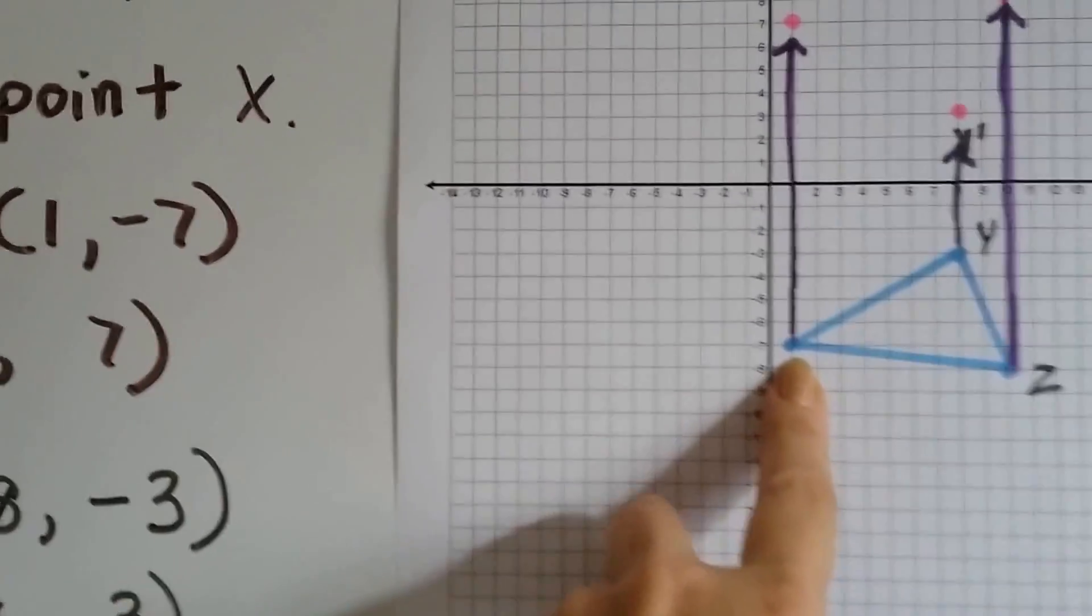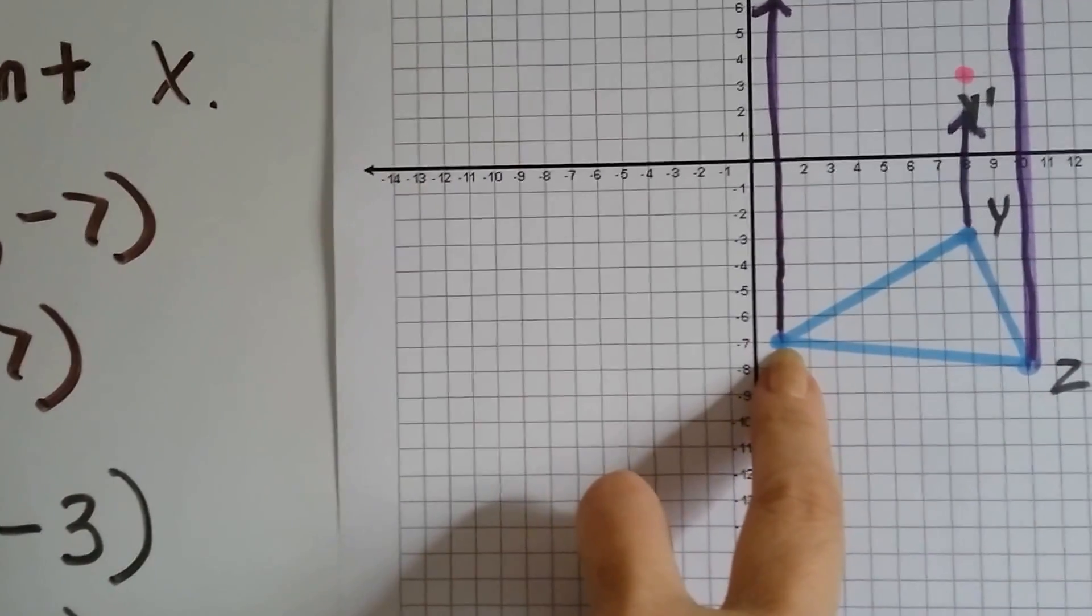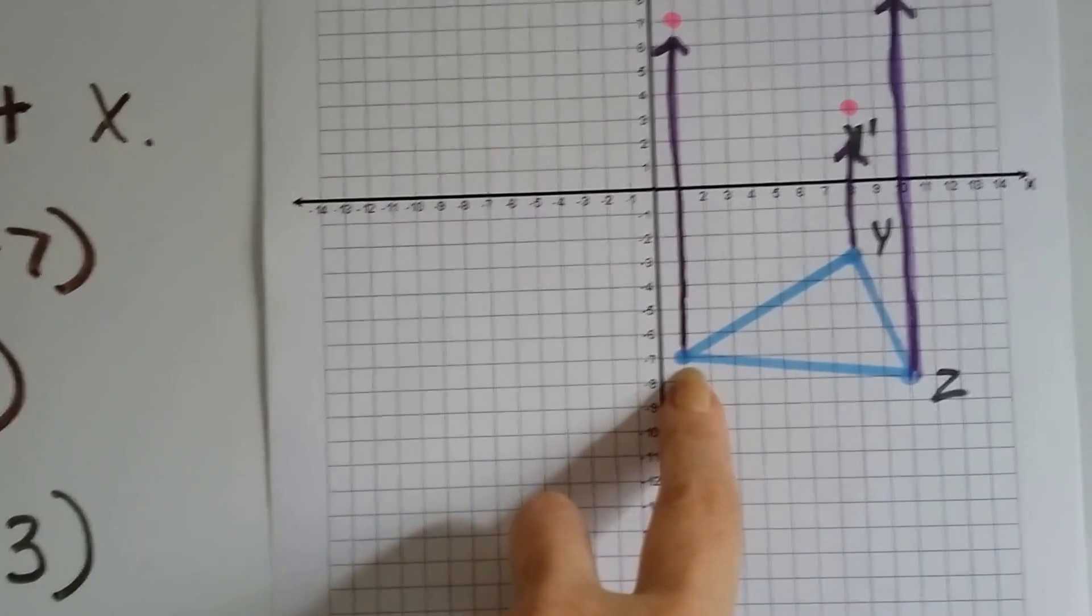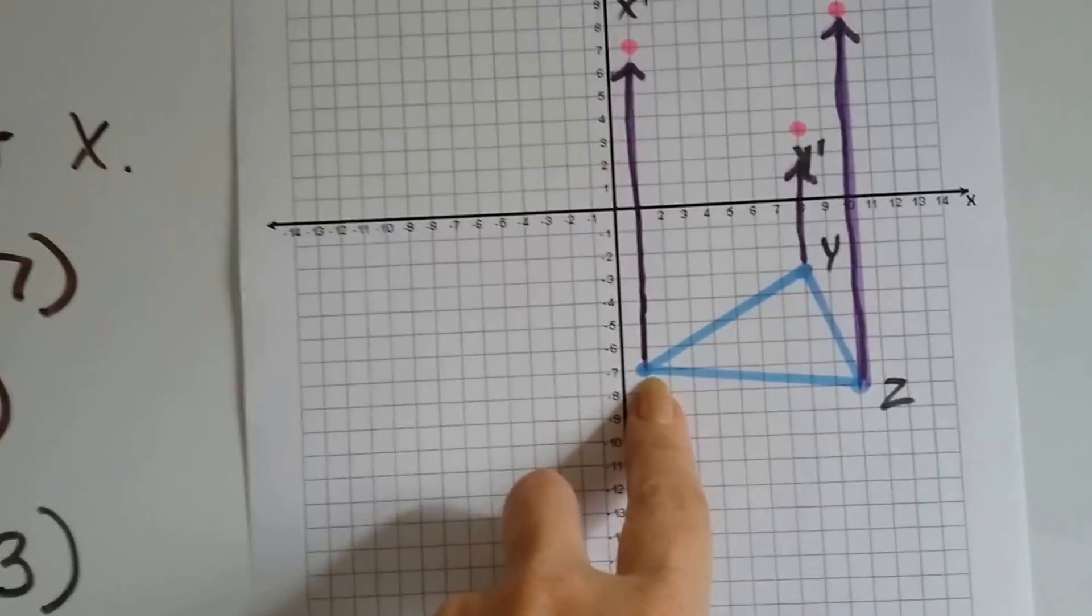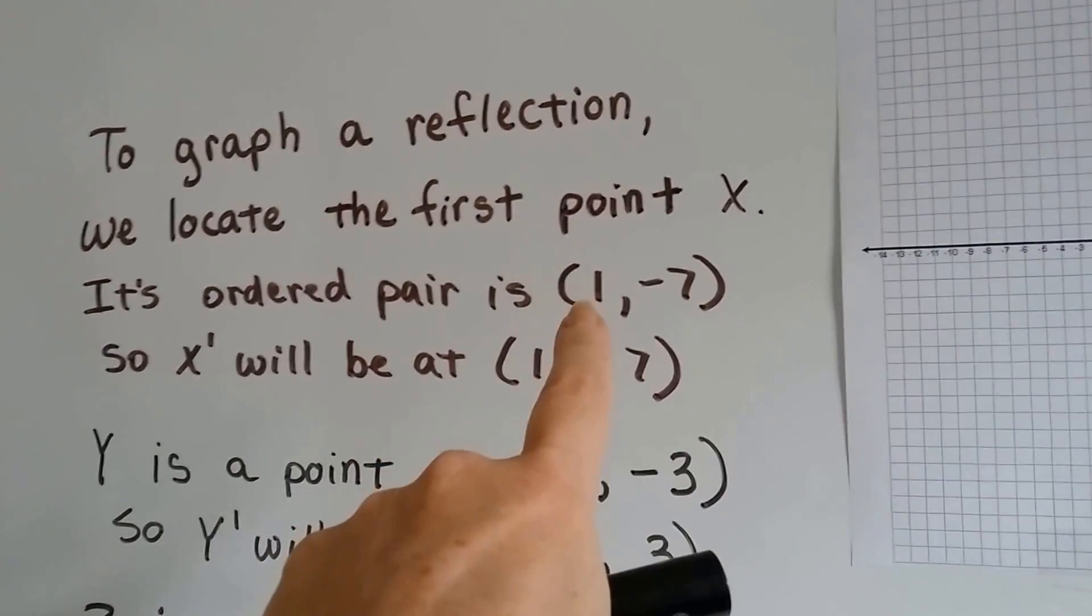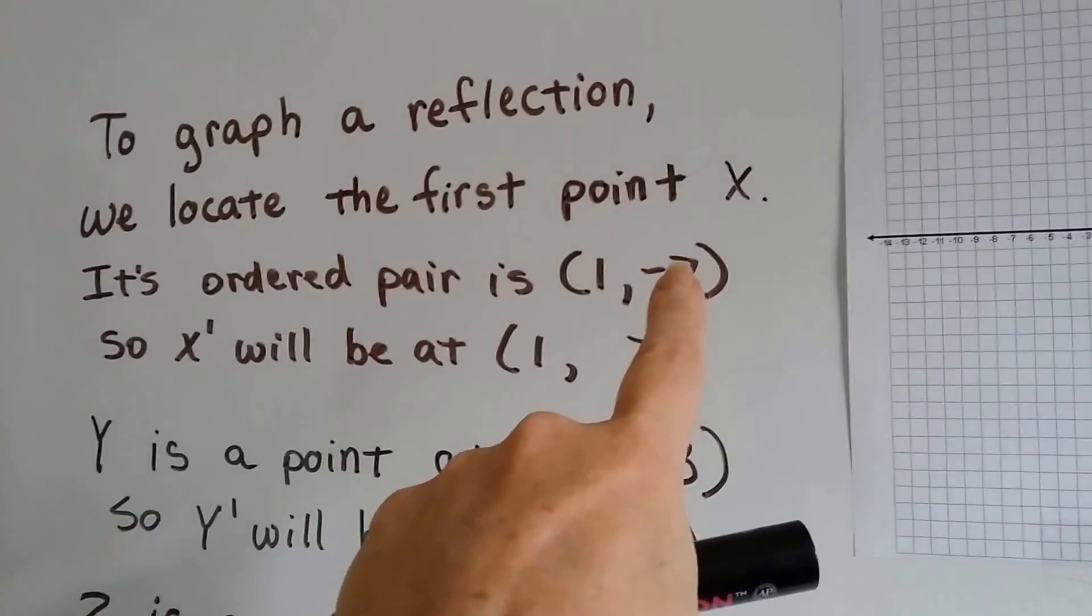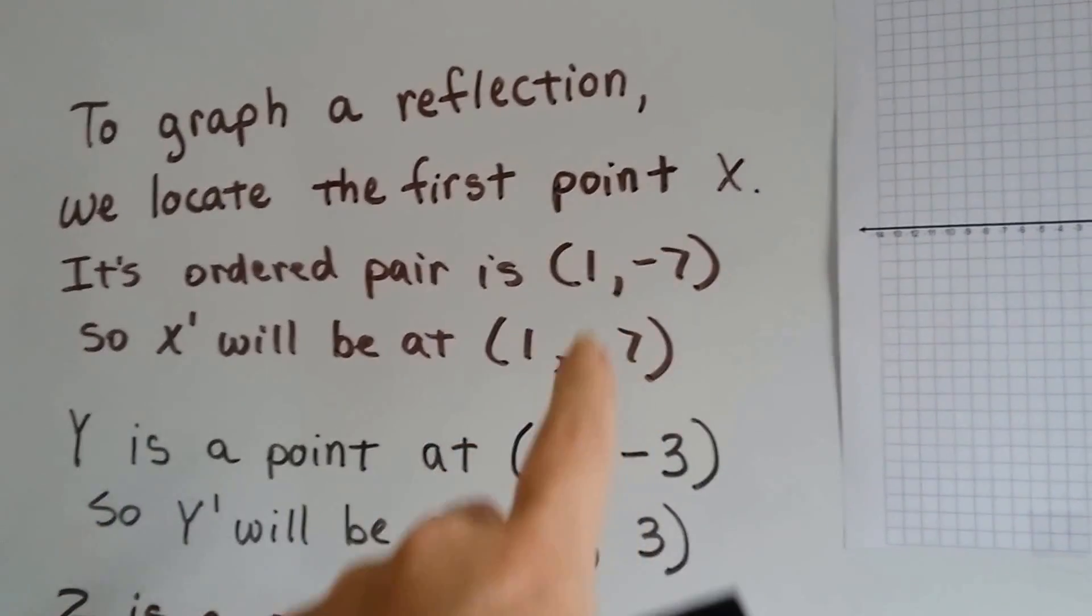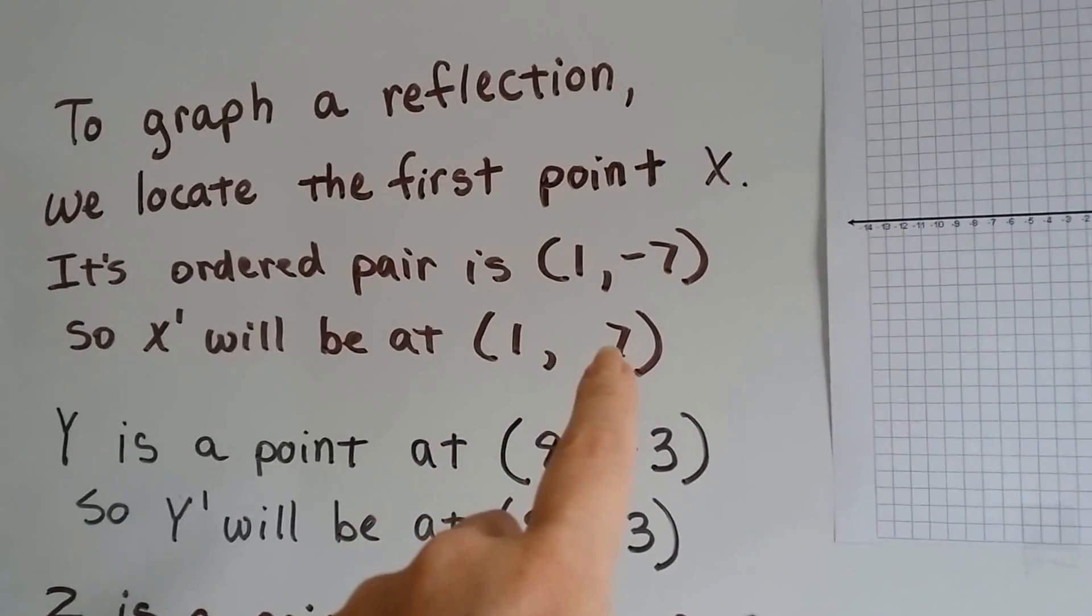Can you see where it's located? This says negative 7 here, and it's on a 1 for the x-axis. So it's at 1, negative 7. So the ordered pair for its location is 1, negative 7. So x prime, its reflection, is going to be in the opposite location. It's going to be at 1, positive 7.